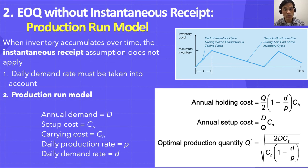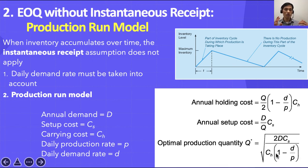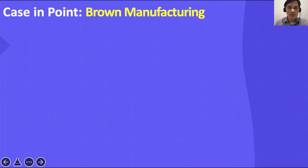If you set the annual holding cost equal to the annual setup cost and solve for Q, you get the EOQ — Q* — which is the square root of 2DC divided by Ch times (1 − d/p). Everything is the same as the regular EOQ model except for the added term (1 − d/p).